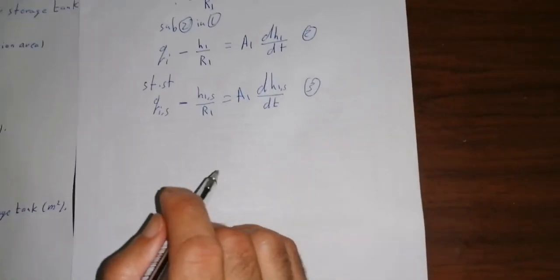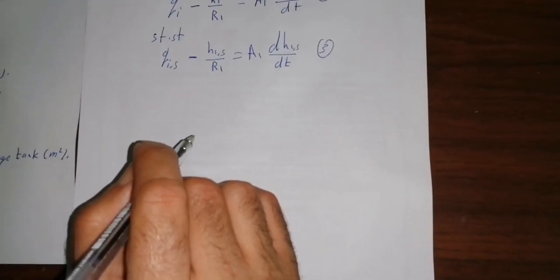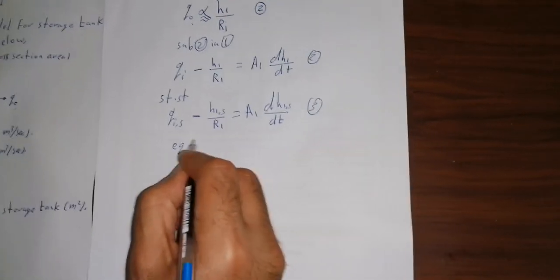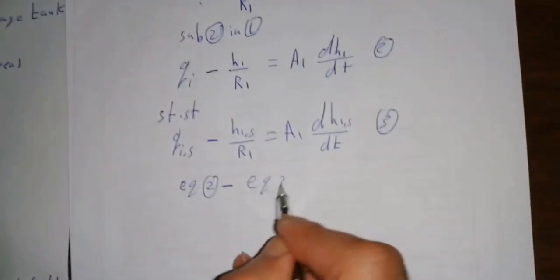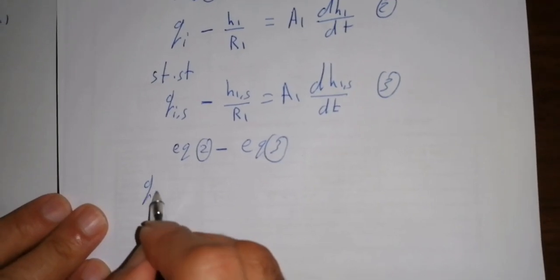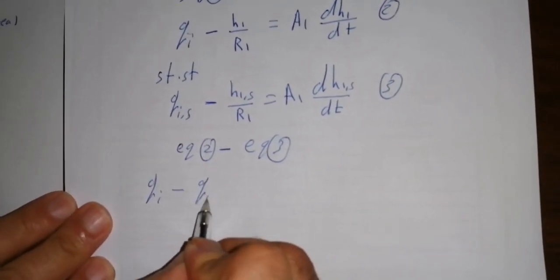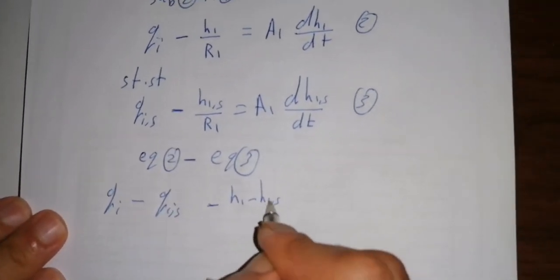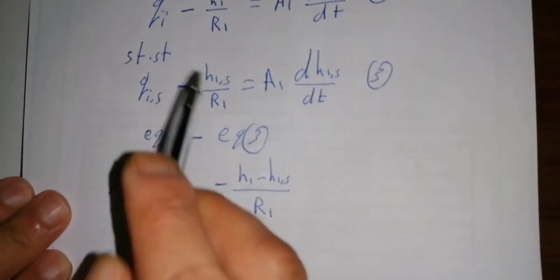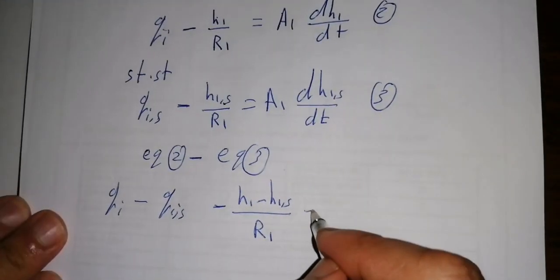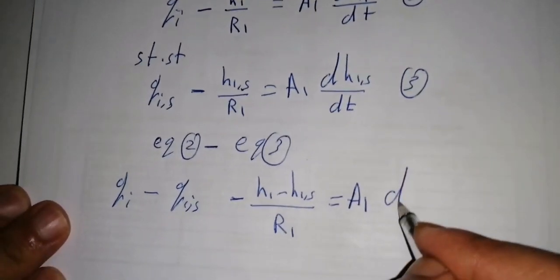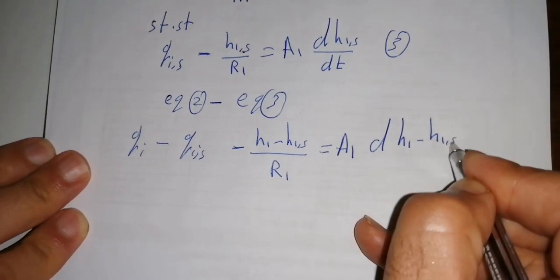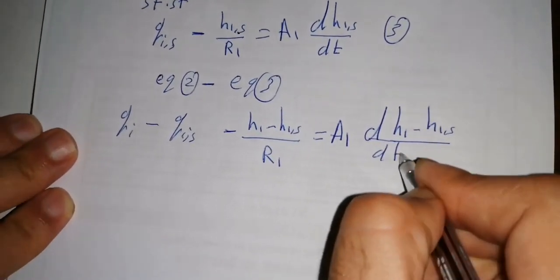To find the deviation from steady state, we subtract equation 3 from equation 2 — that is, the dynamic minus the steady-state. This gives: (QI minus QI_s) minus (H1 minus H1_s)/R1 equals A1 * d(H1 minus H1_s)/dt. This is equation 4.